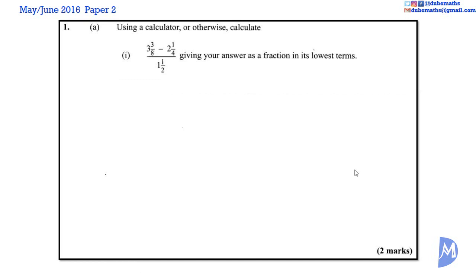I say this because the question reads 3⅜ minus 2¼ divided by 1½. Knowing BODMAS, you would be tempted to divide before you subtract. But in actuality, this problem should read open brackets 3⅜ minus 2¼ close brackets divided by 1½. I am saying that this sum is the same as the numerator in brackets divided by the denominator in brackets. So, let's begin.